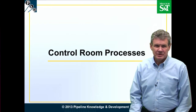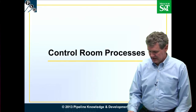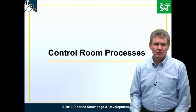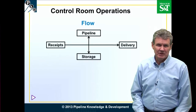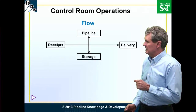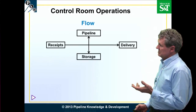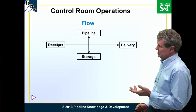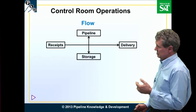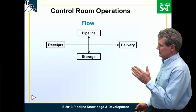We discussed control room regulations and now we're going to move on to the control room processes. These are basically the workflows that people use whenever they're working in the control room. Simplistically, we have receipts, we have deliveries, we have storage, we have the pipeline, and it flows along.